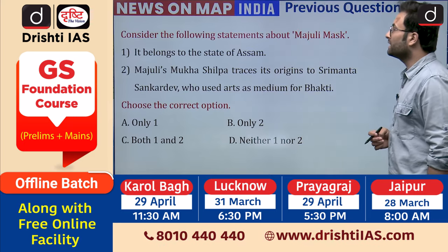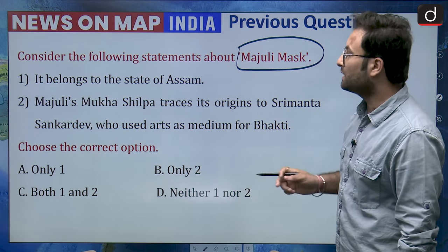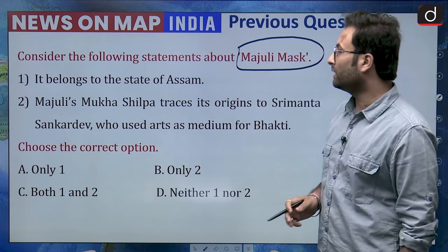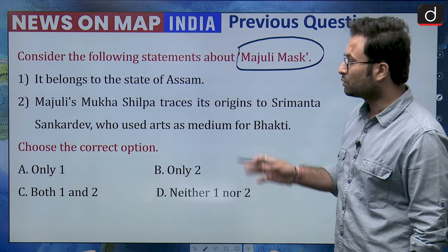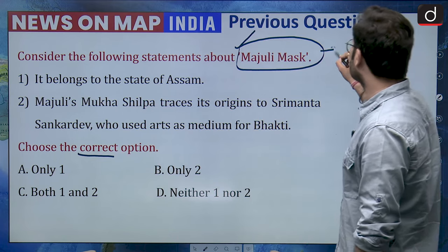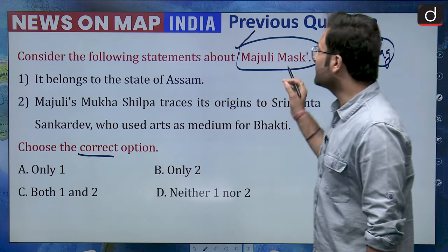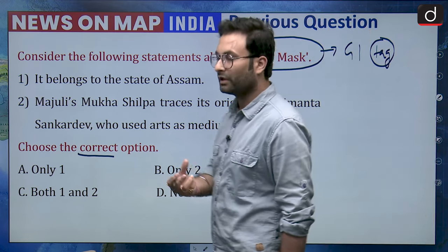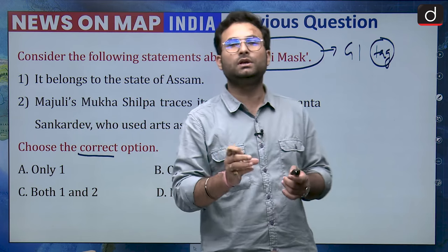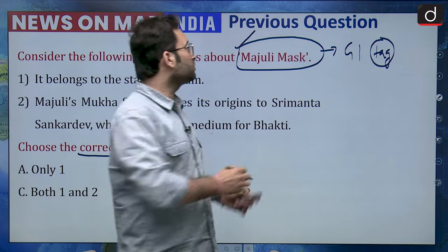The question was: consider the following statements about Majuli Masks. First, it belongs to the state of Assam. Second, Majuli Masks or Majuli Mukha Shilpa traces its origin to Sriman Sankar Deva, who used art as a medium of Bhakti. Recently, Majuli Masks have been granted a GI tag along with Majuli paintings. A GI tag attaches a geographical origin to the product and adds value to its specific characteristics. This GI tag was given in Assam.